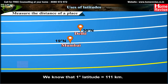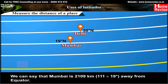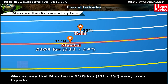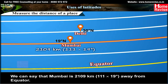We know that 1 degree of latitude equals 111 km. So we can say that Mumbai is 2,109 km (111 × 19 degrees) away from the equator.